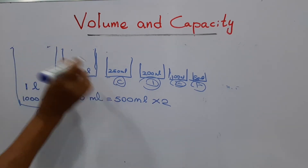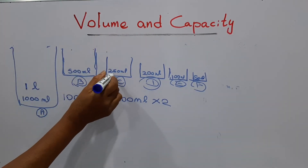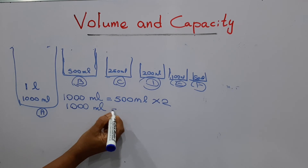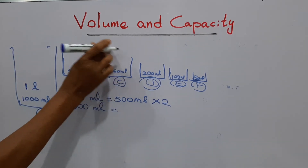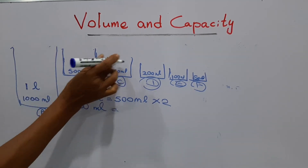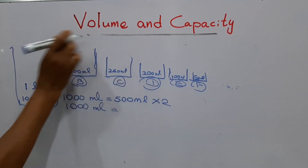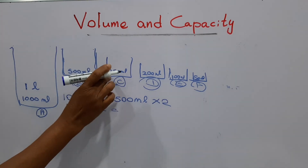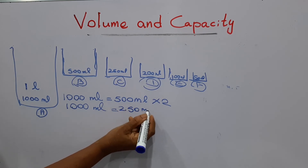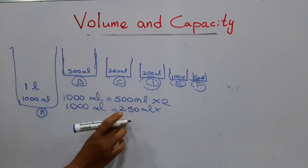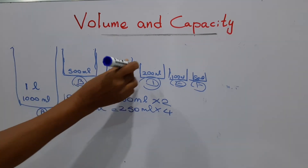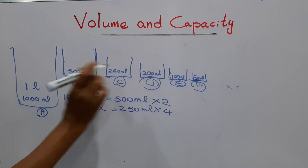Now we will move to the C container. The capacity of C is two hundred and fifty milliliters. This is the A container — that is one liter or one thousand milliliters. Using the C container to fill A, how many times do we have to put water? That means how many two hundred and fifties are there in one thousand? The answer is four — we have to put water four times to fill this container.